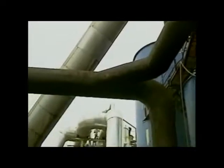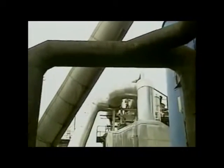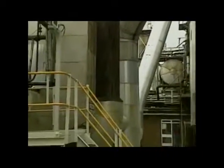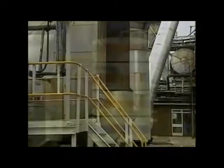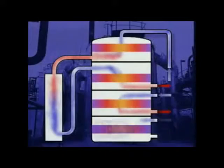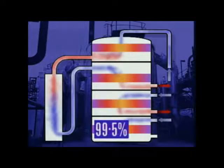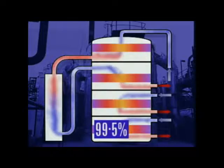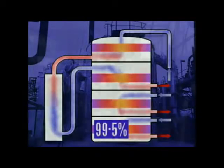The gas from the top of the tower still contains some sulphur dioxide and oxygen, and is fed back into the final bed of the converter, after which 99.5% of the original sulphur dioxide has changed to sulphur trioxide.